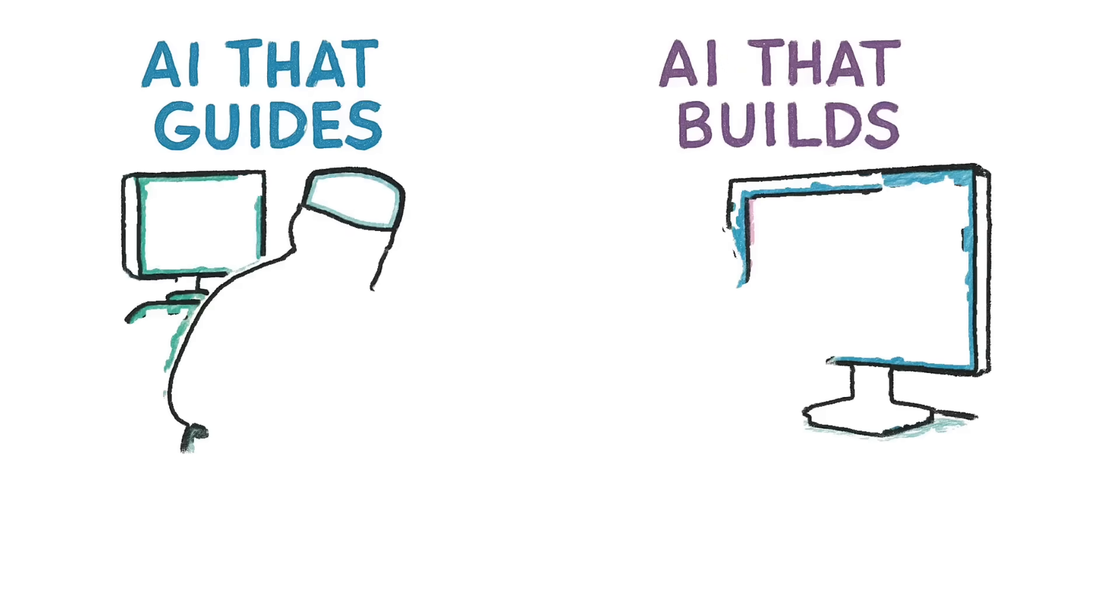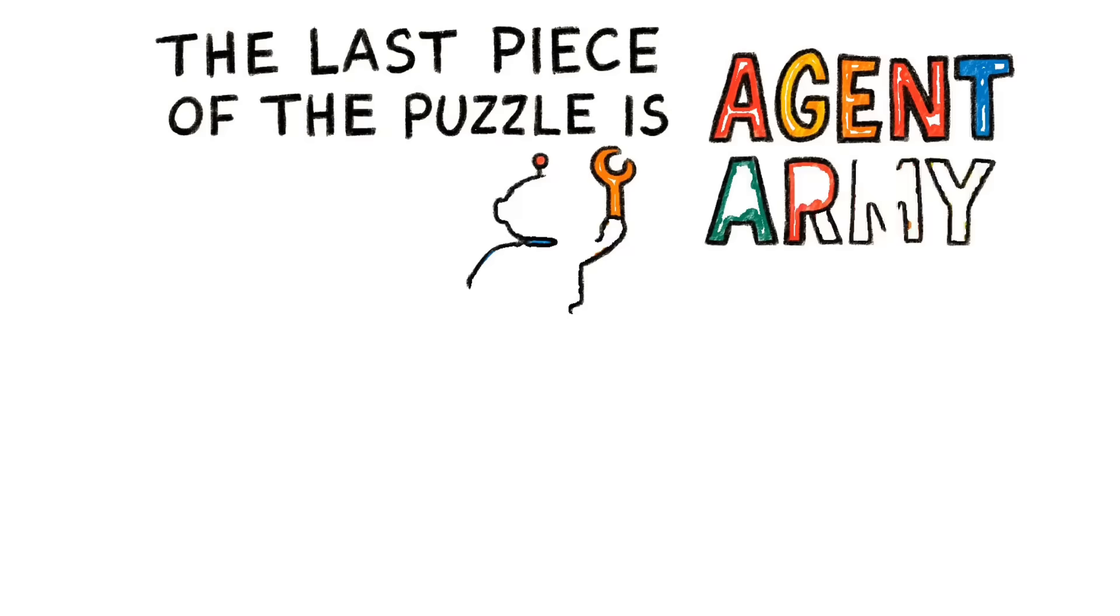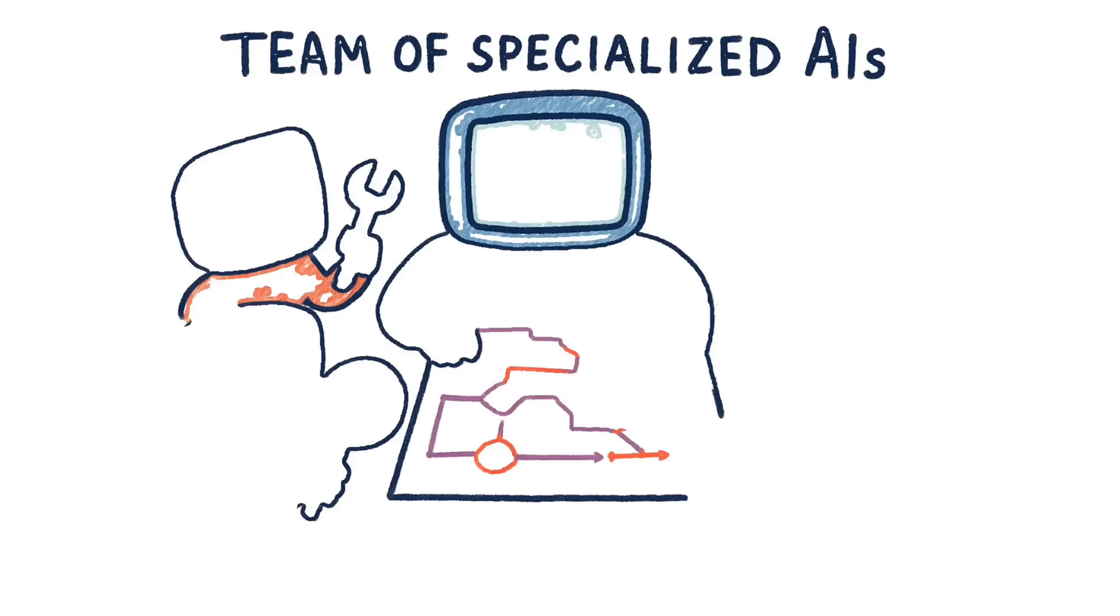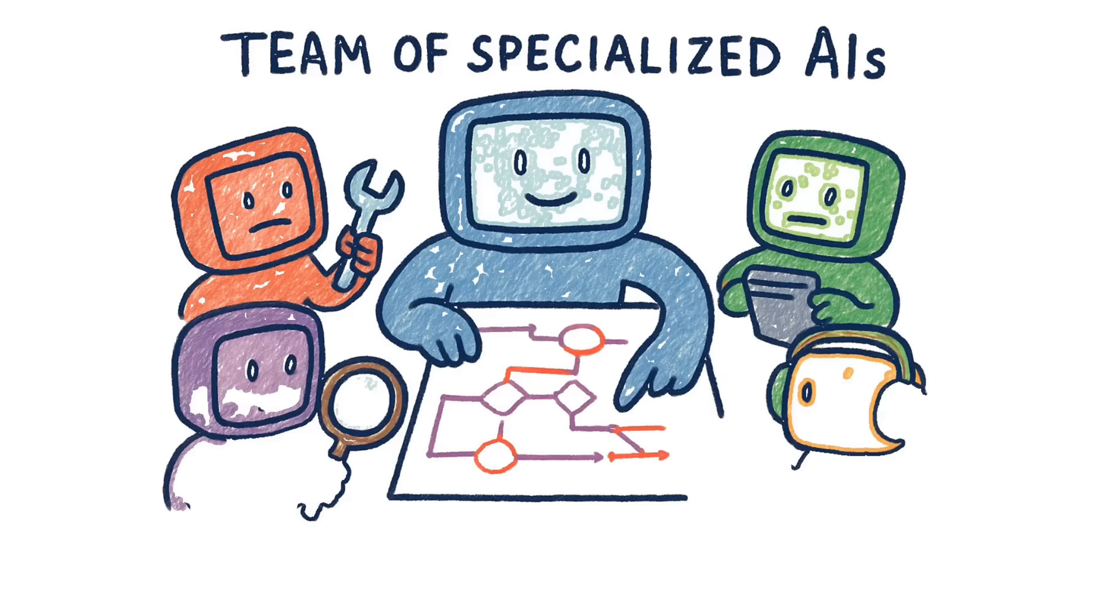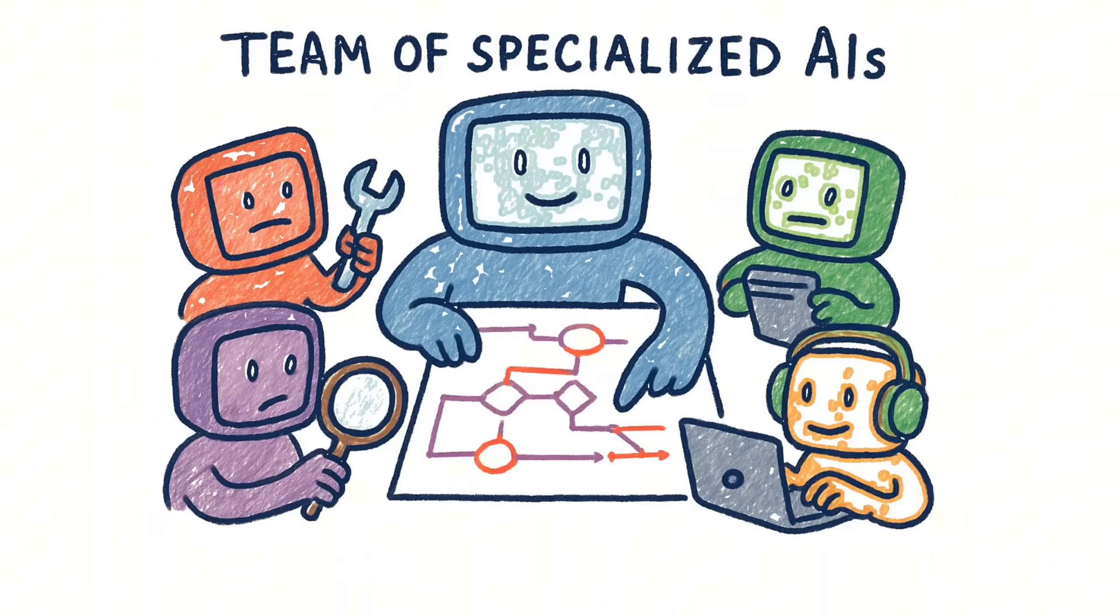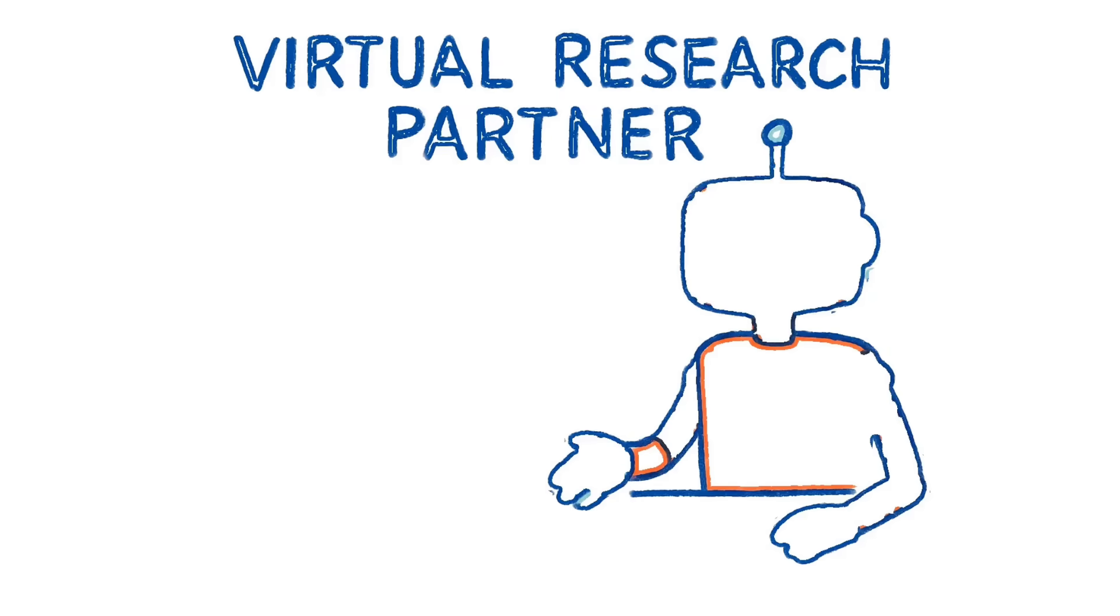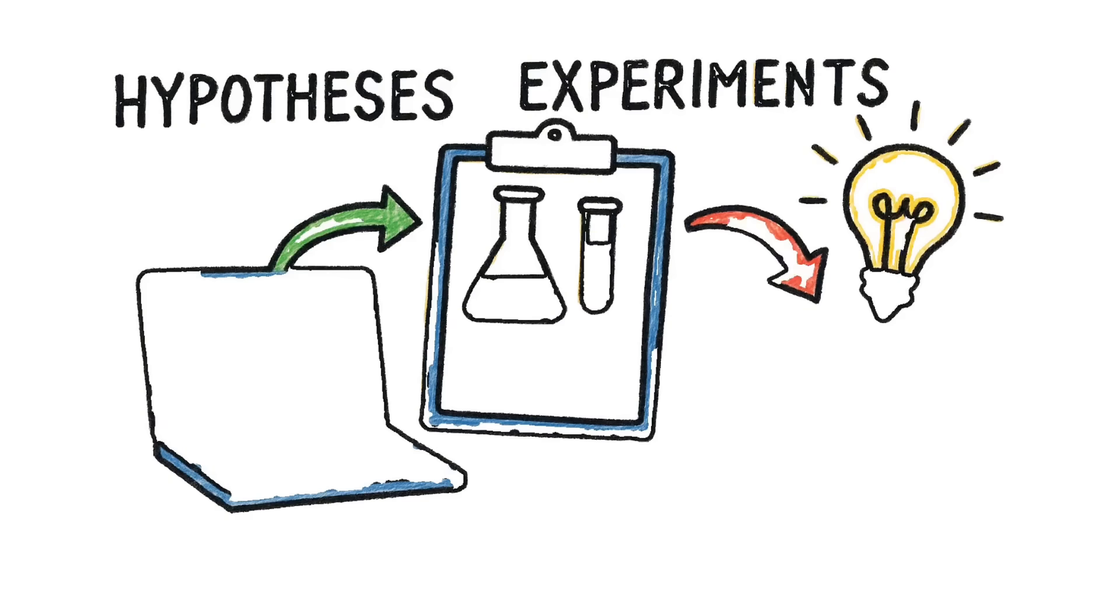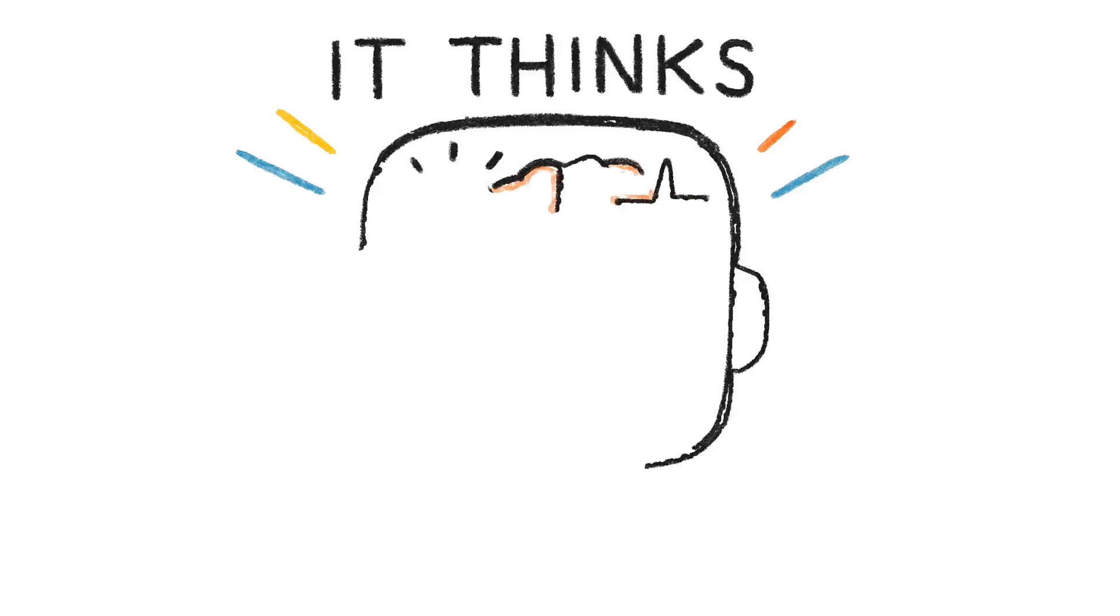So we have an AI that guides you in the real world and an AI that builds virtual worlds. The last piece of the puzzle is the agent army. Instead of one single AI trying to do everything, imagine a team of specialized AIs, each with its own tools and goals, working together on a massive task. Google is building one called CoScientist. It acts like a virtual research partner. It doesn't just search and summarize papers. It generates testable hypotheses, designs the experiments to prove them, and proposes original research directions. It actually thinks.